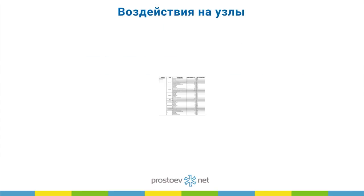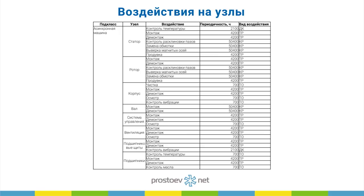Возможно, частично это ответы на вопросы по поводу мелких элементов. Но мы их называем не мелкими, а ресурсоопределяющими элементами. Вот с Росгидро, например, у них это называется именно так — есть целая методология выделения ресурсоопределяющих элементов оборудования. То есть с точки зрения двигателя, есть компоненты, которые в основном определяют надёжность этого двигателя с точки зрения отказа.